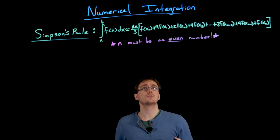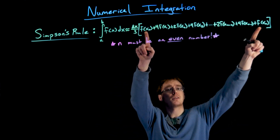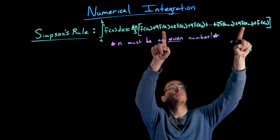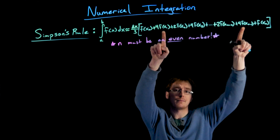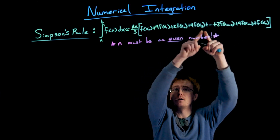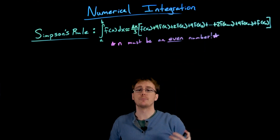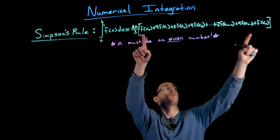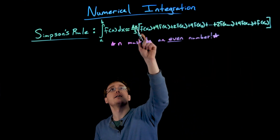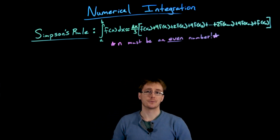The way I remember Simpson's rule is: the first and last terms in our sum are just the regular terms, f of x₀ and f of xₙ. The inner terms are going to be multiples of 4, then multiples of 2, back to multiples of 4, back to multiples of 2 — always bouncing back and forth between these multiples of 4 and 2, except for the very end terms. And we're not just multiplying by delta x, but delta x divided by 3.